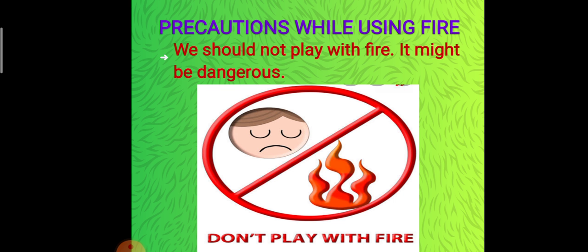The precautions we can take to avoid such accidental cases — what kind of methods we should adopt to avoid accidents of fire. We should not play with fire; it might be dangerous. As you all are small kids, this thing you should always keep in your mind. Your parents and elders may tell you again and again that you should not play with matchsticks or crackers. These are the things which may harm you in different ways. Playing with fire is always very dangerous — you should avoid it. Even tell your younger brother or sister to stay away from fire and not play with it.